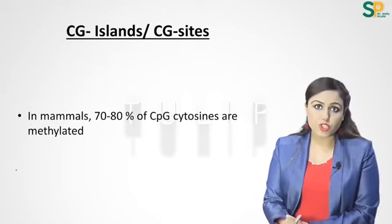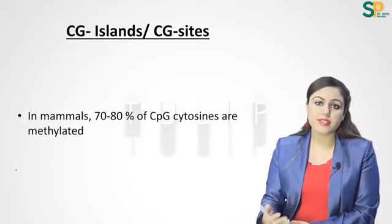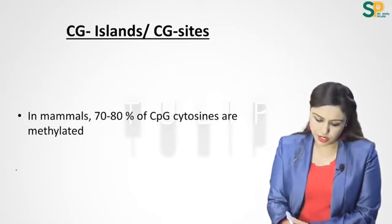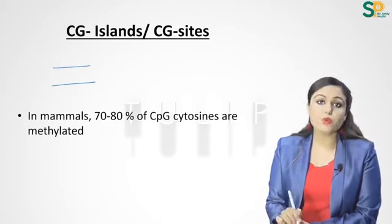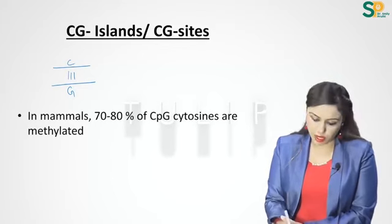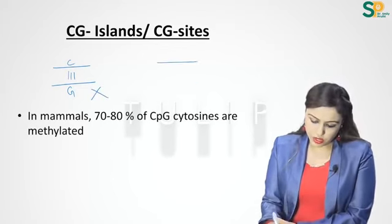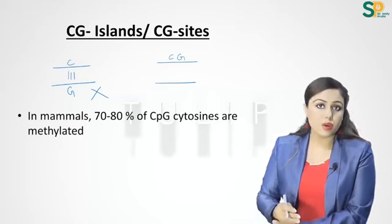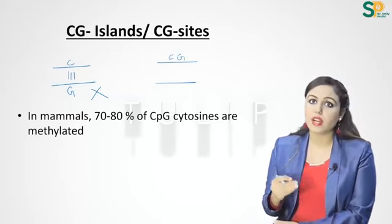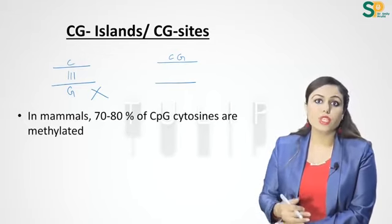Acetylation and phosphorylation of histones lead to increased euchromatin formation, meaning gene activation. Now, CG islands or CG sites: by the Human Genome Project we know there are many CG sites in our genome. CG sites are where cytosine and guanine are together present on the same strand of DNA.